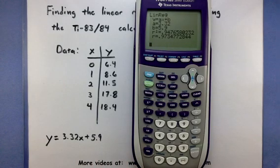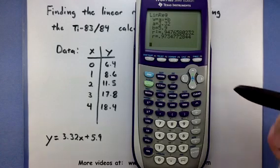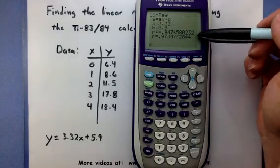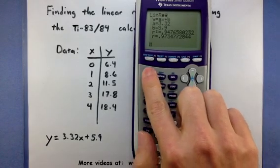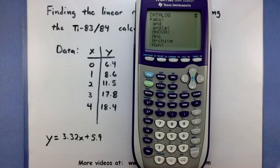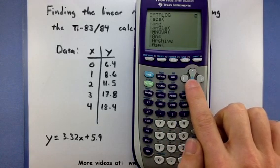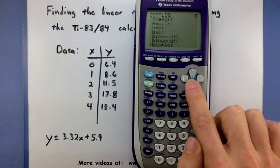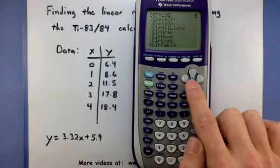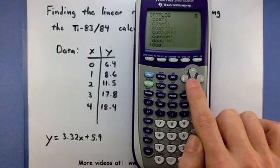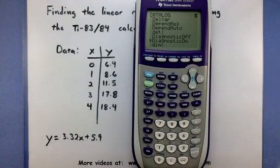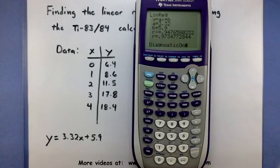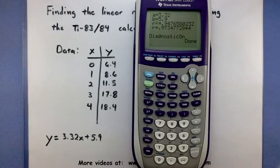Now one thing that might happen when you go through this process is your calculator returns the A and B value, but it doesn't show the R squared or R. If this happens to you, that's okay. Press your second button and go into your catalog. Scroll all the way down until you find the option that says Diagnostics On. There we are. Once you find it, press enter, then enter one more time.